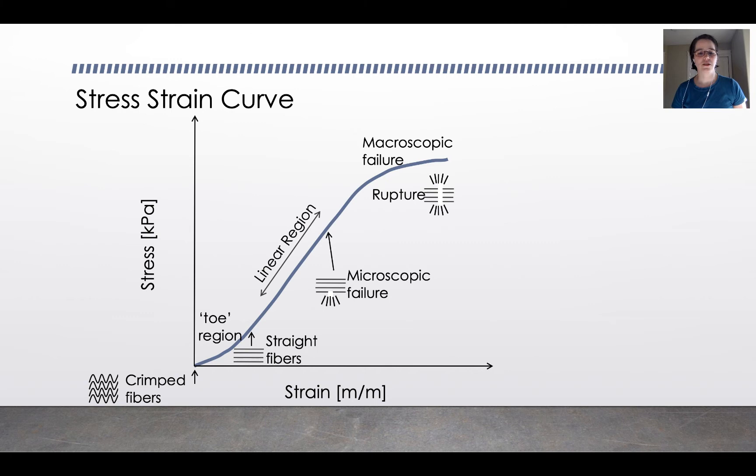This is the characteristic kind of S-shaped stress strain curve of a tendon. The physiologic strain range is 6% to 8% strain. And it is interesting to note that microscopic failure does start to occur at the top of the physiologic range. Even if you're operating within the physiologic range, there is some small damage to your tendon, which is normal and healthy.